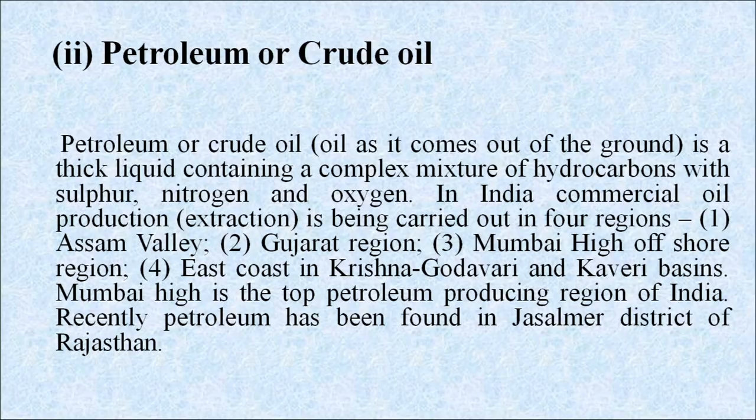Coal formation takes place over thousands of years. First, partially decayed plant matter in swamps, known as peat, under immense heat and pressure turns into lignite, which is brown color coal — low cost and low sulfur content. Due course of time, under immense heat and pressure, bituminous coal or soft coal is formed, which is generally used as fuel. Again, under immense heat and pressure, anthracite or hard coal is formed — a desirable fuel with low sulfur content.